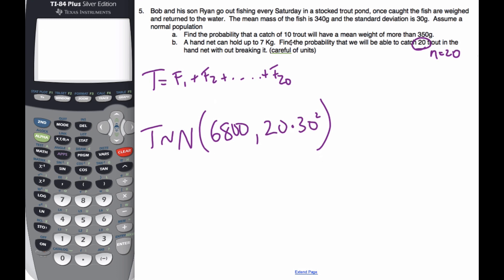And I'm looking for the probability that I can catch 20 trout without breaking it. So I'm looking for the probability that my total is less than or equal to 7,000 grams. That's what I'm looking to find.